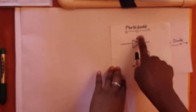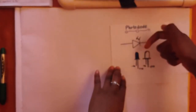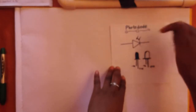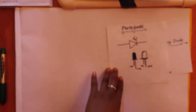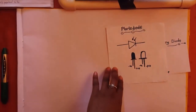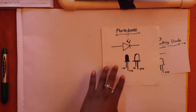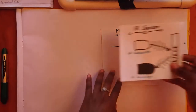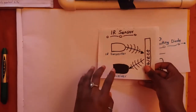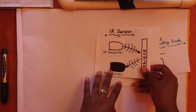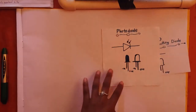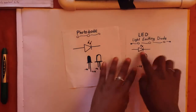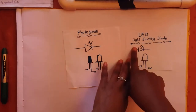How do we know the photodiode? The arrows point in — unlike in the LED, where they point out. So the arrows pointing inward distinguish the photodiode symbol from the LED symbol.